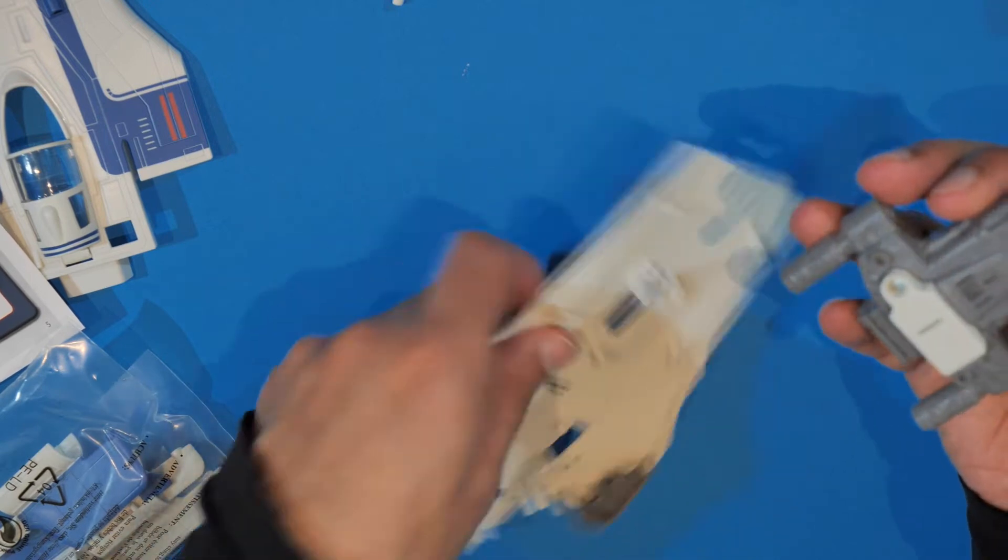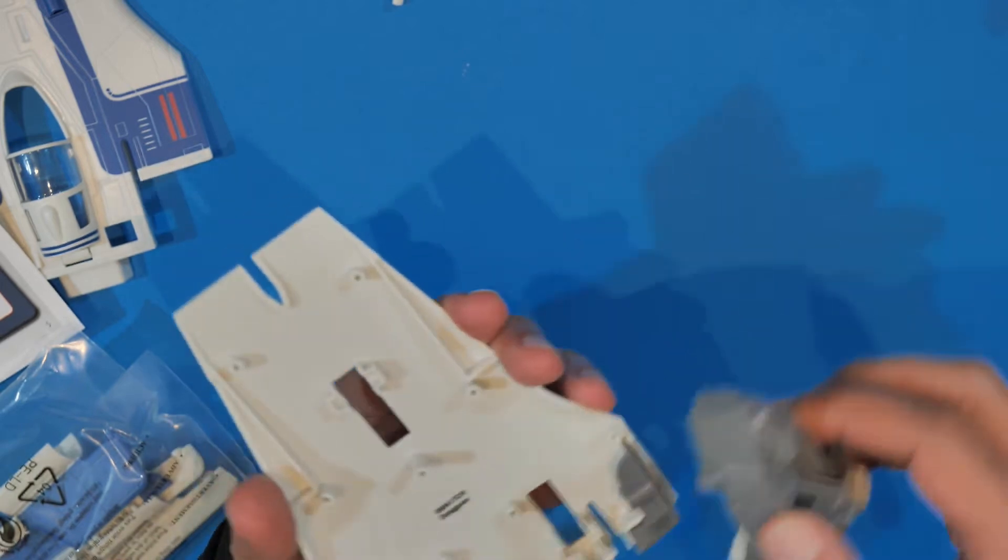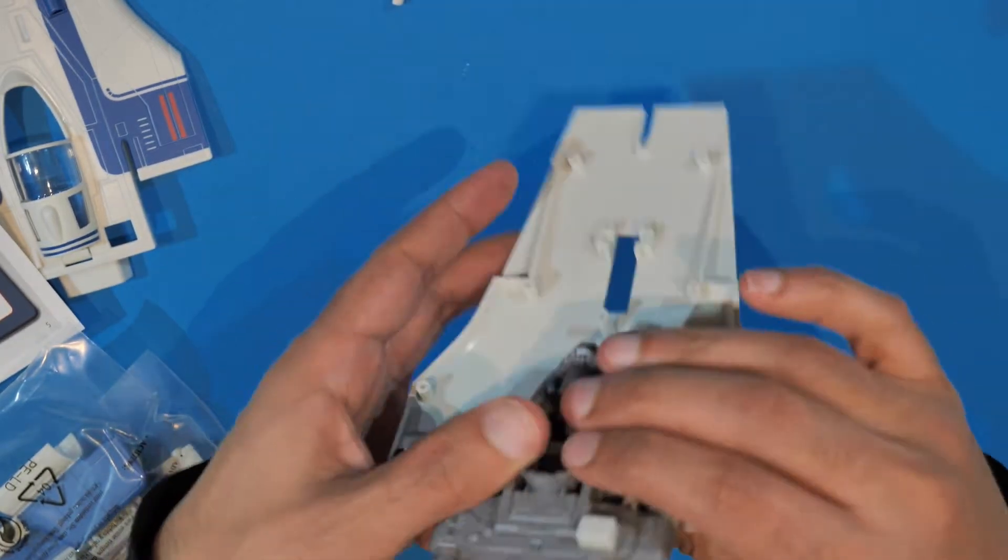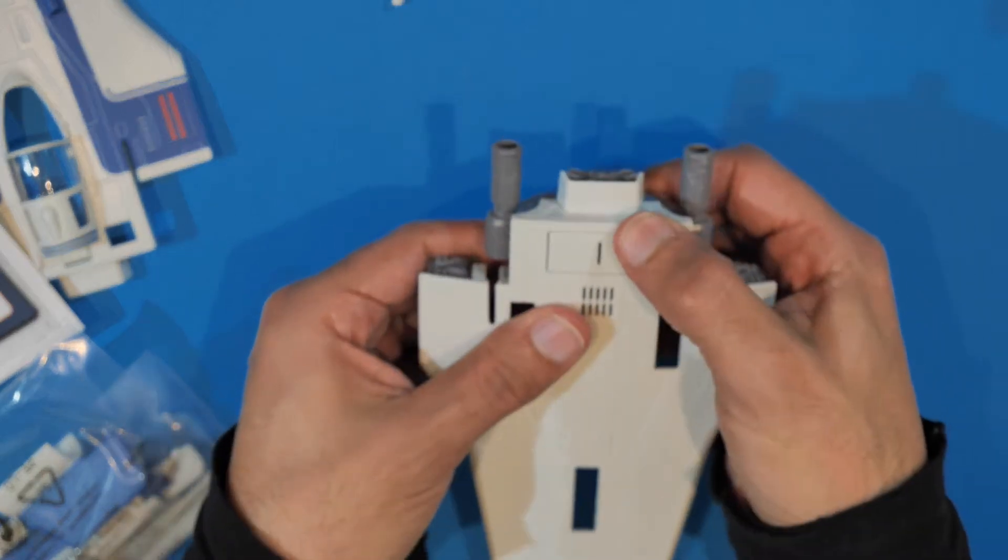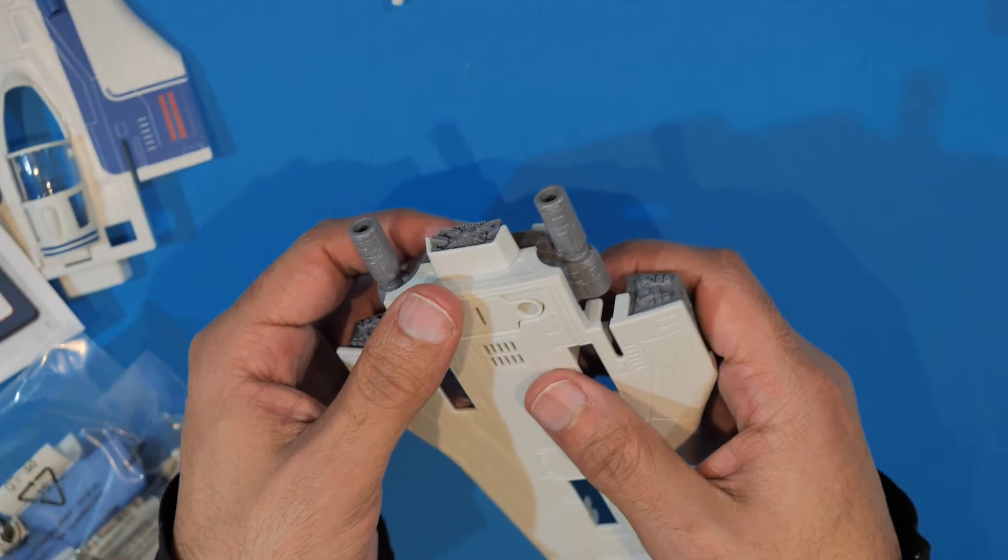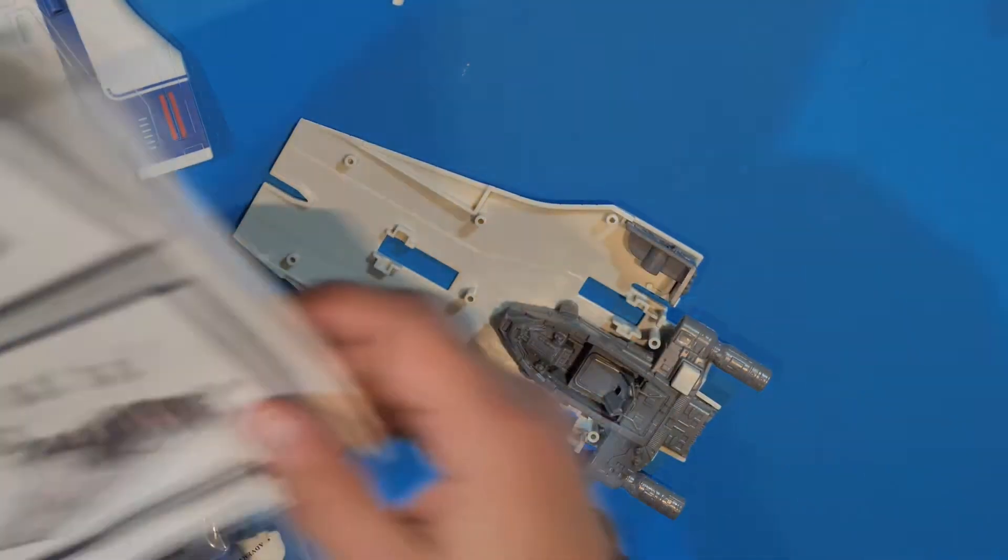Next bit is going to drop this into here, so these bits right at the back. There we go. Should have taken the batteries out really. Anyway, now we're in stage four, the landing gear.